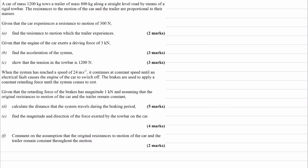We have a car of mass 1,200 kilograms pulling a trailer of mass 800 kilograms along a level road by means of a tow bar. We're told in the question that the resistances to motion of the car and the trailer are proportional to their masses. So let's draw a force diagram for this scenario to start with.